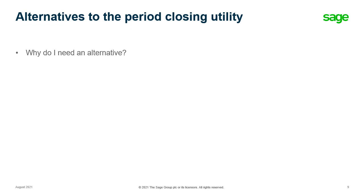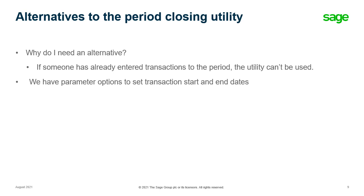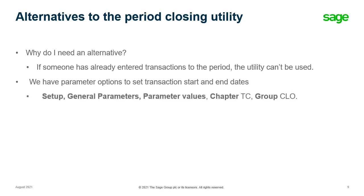Now you're probably wondering, why do I need an alternative to the period closing utility? Well, remember, if someone has already entered transactions to the period, the utility can't be used for that period. But we do have parameter options to set transaction start and end dates to limit the periods that people can enter transactions into. You can find these under Setup > General Parameters > Parameter Values > Chapter TC > Group CLO. See the online Help Center for more details.